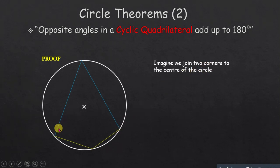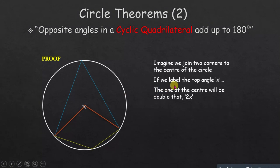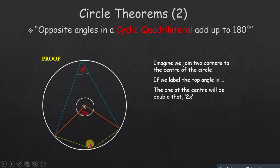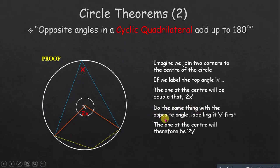We join two corners from the quadrilateral to the center of the circle. If we label the top angle at the circumference as x, then the angle at the center will be 2x — that is one of the properties of this theorem. The angle at the center is twice the angle subtended at the circumference. Adding the two parts will give 180 degrees.